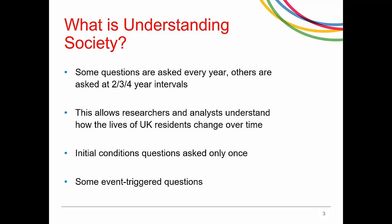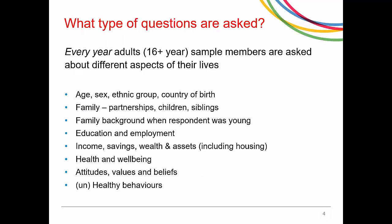There are some questions which are triggered by certain events. For example, if a respondent says that they have a child of the age of three, then certain questions get triggered about that three-year-old child. All those who are 16 or above in these households are considered adults for survey purposes and are eligible for adult interviews every year. They are asked about almost every aspect of their lives — age, sex, ethnic group, country of birth, family, partnerships, children, family background, education, employment, income, health and well-being, attitudes, and so on.